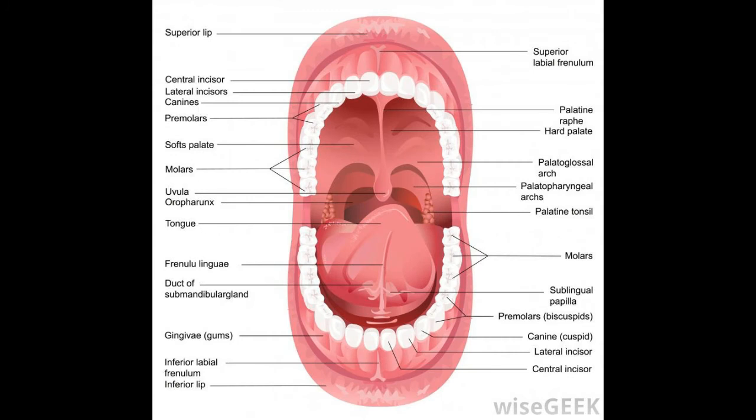Bicuspids are shorter than the canines and smaller than the molars. The primary molars are larger than the bicuspids that eventually replace them. Their smaller size may naturally correct overcrowding of teeth in smaller mouths. It is not unusual for one or more to be missing naturally, and they are also commonly removed to correct ongoing issues with overcrowding. They are usually the first choice if removal is necessary because they are not as prominent or visible as teeth in the front of the mouth, and their absence has less of an impact on the appearance of the smile.